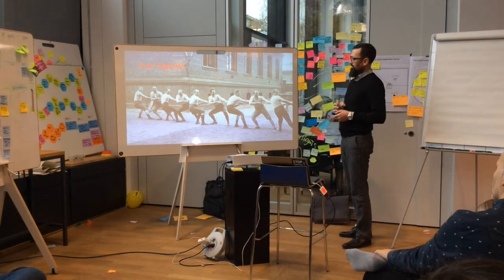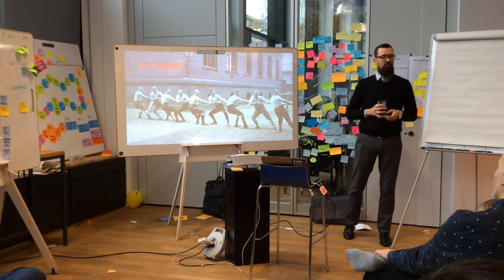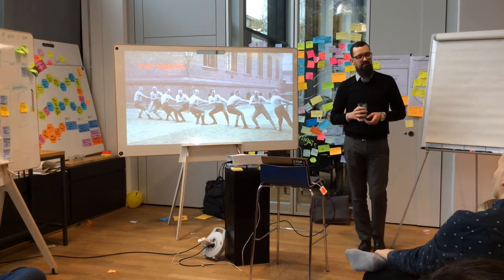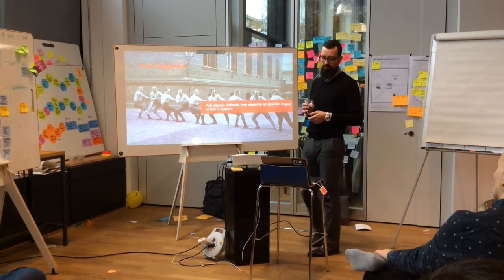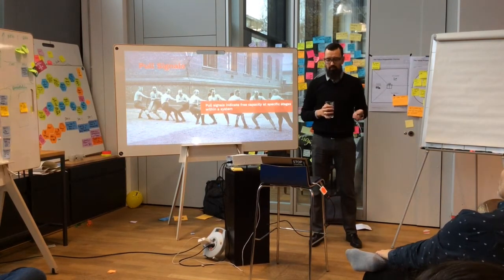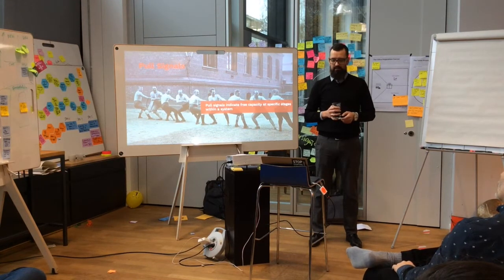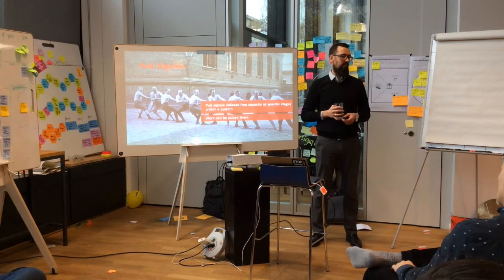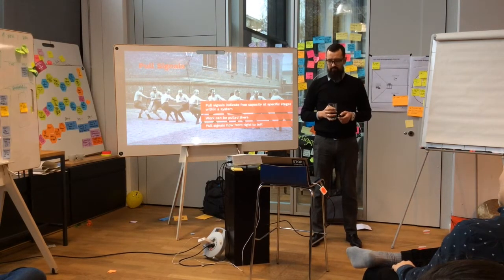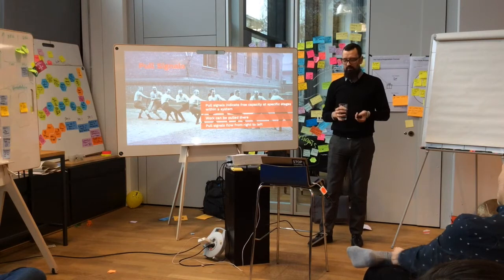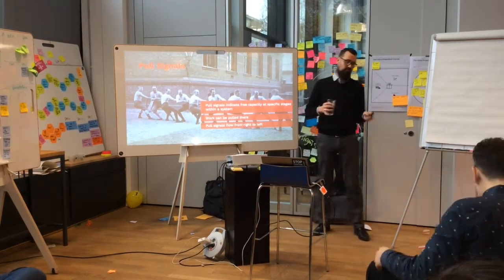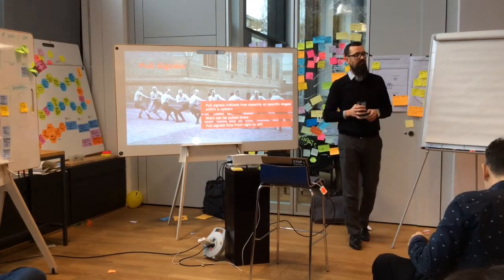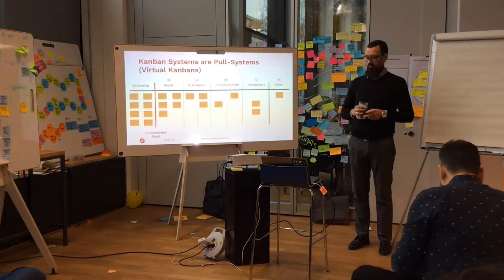So what are pull systems and pull signals? We need those pull signals in order to implement a Kanban system. Pull signals really indicate at which point in your process or workflow there is capacity. If you know that, you can pull work into that workflow step. The pull signal propagates from right to left, and work usually flows - at least in the Western world - from left to right.